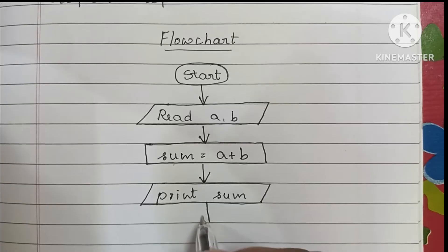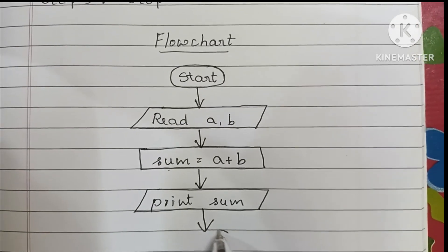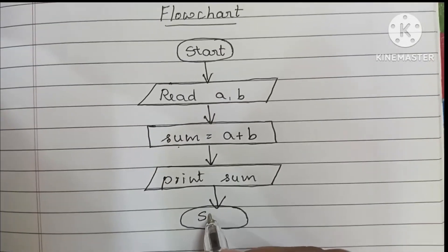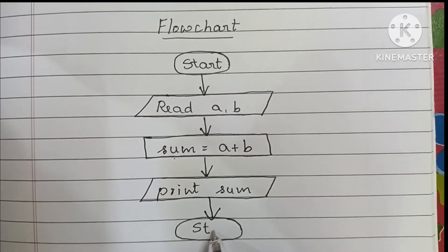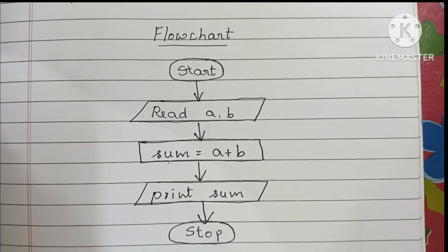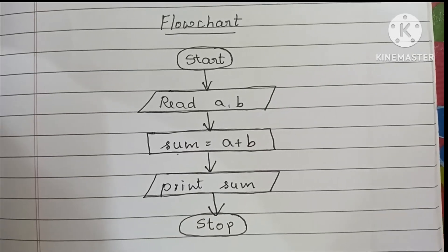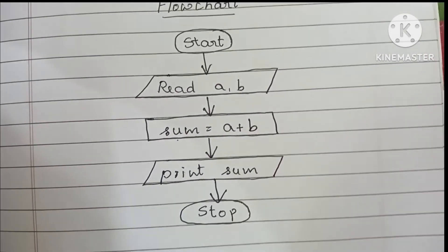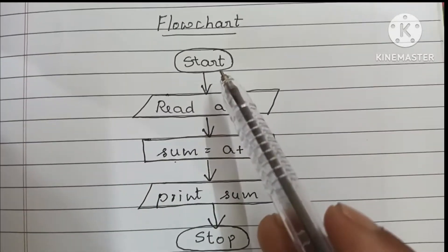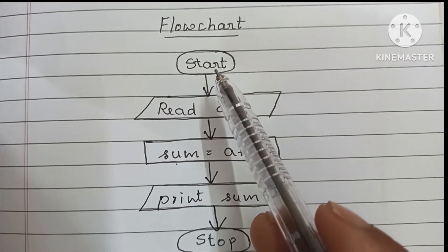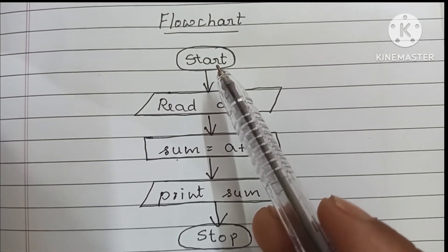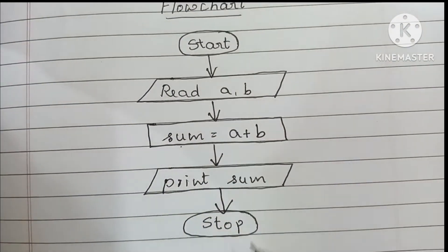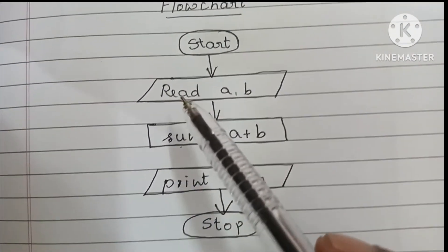Next, we have to stop the flowchart using the stop statement, which is also written within an oval shape. So the flowchart starts with the start statement in an oval shape — start and stop are always written within an oval shape.